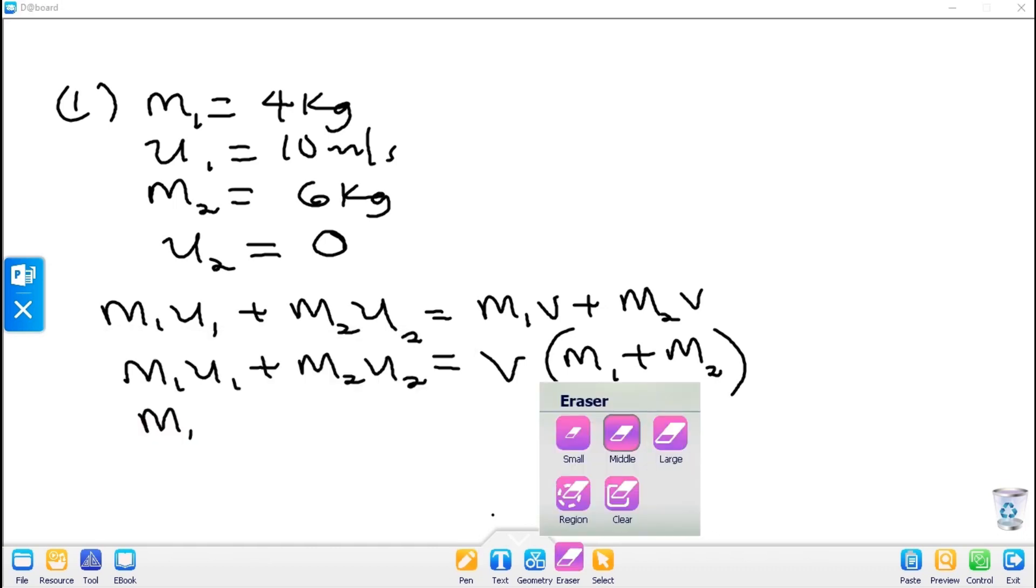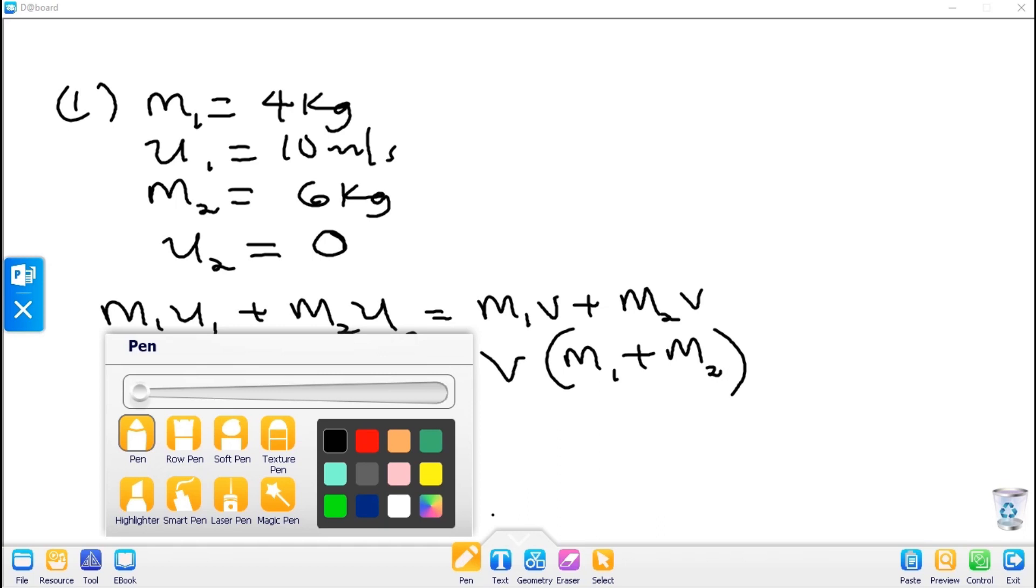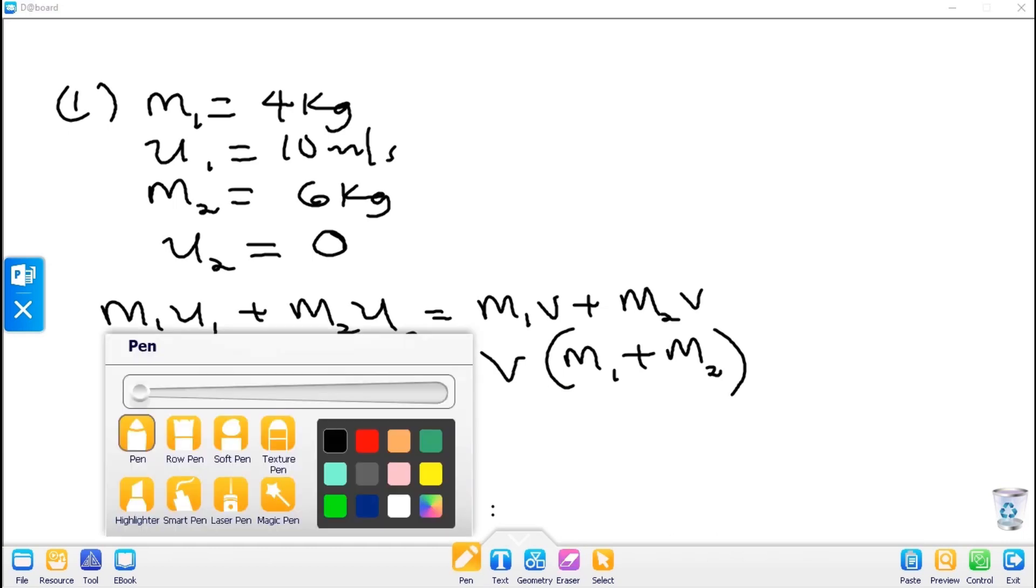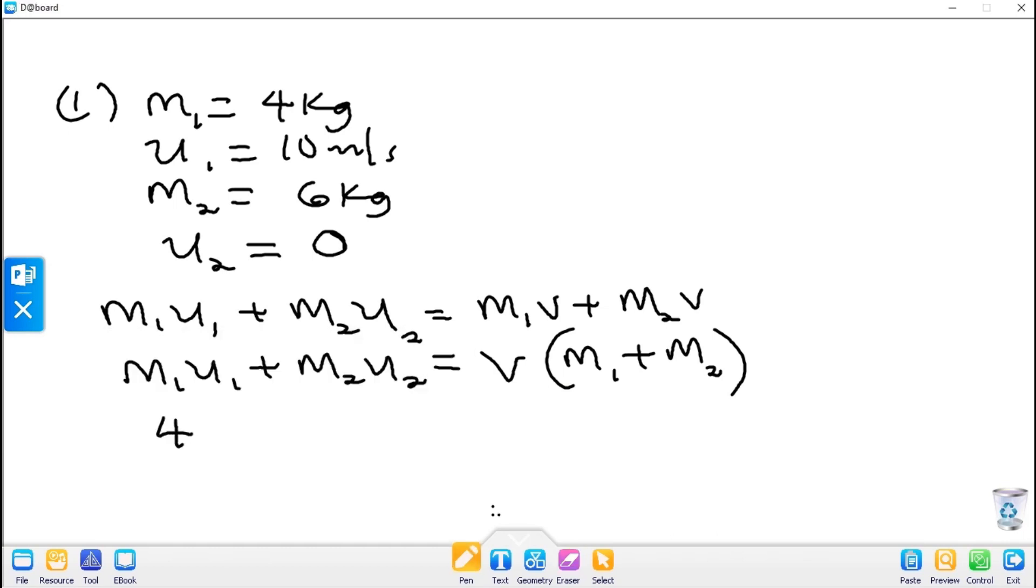Let's put the values into the equation. The first mass, 4 times 10, plus the second mass, 6 times 0, equals V into 4 plus 6.